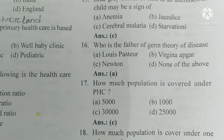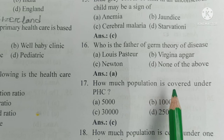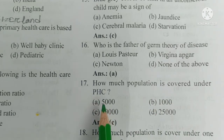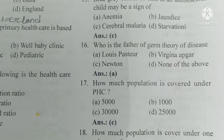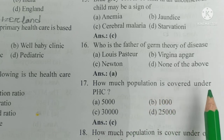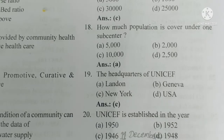Number 17/18. How much population is covered under PHC (Primary Health Center)? A) 5,000, B) 1,000, C) 30,000, D) 25,000. The answer is C — 30,000 population is covered under PHC, the primary health center.